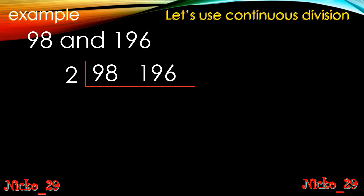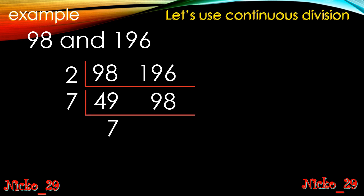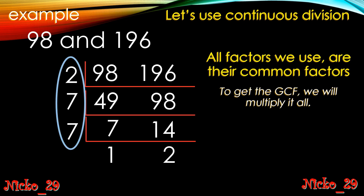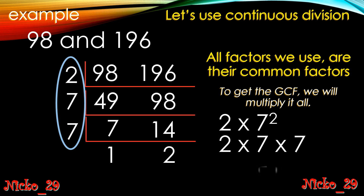Next example: 98 and 196. Both are even, so divisible by 2 — giving 49 and 98. Here's a trick: when you divide two given numbers by 2 and the quotient of the larger number equals the smaller number, then the smaller number is the GCF. So the GCF is 98. Continuing to verify: dividing by 2 gives 1 and 2, which are relatively prime. So GCF = 2 × 7 squared = 2 × 49 = 98.